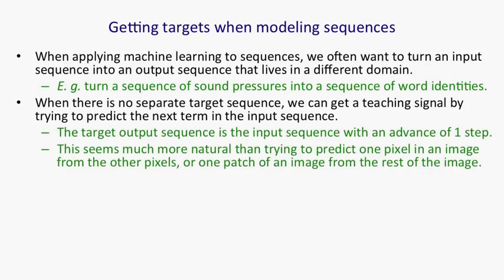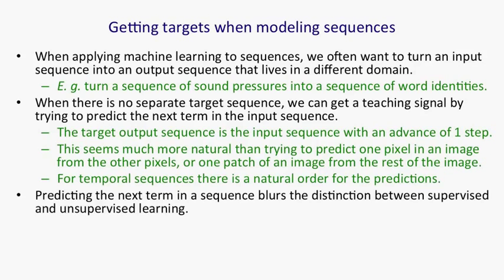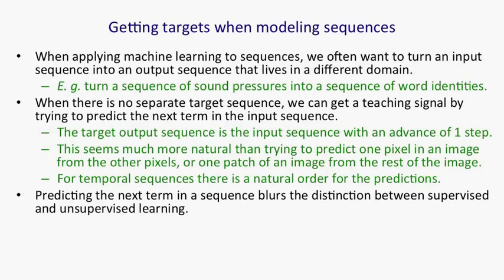This seems much more natural than trying to predict one pixel in an image from all the other pixels, or one patch of an image from the rest of the image. One reason it probably seems more natural is that for temporal sequences, there's a natural order to do the predictions in, whereas for images it's not clear what you should predict from what. But in fact, a similar approach works very well for images. When we predict the next term in a sequence, it blurs the distinction between supervised and unsupervised learning. We use methods designed for supervised learning to predict the next term, but we don't require a separate teaching signal, so in that sense it's unsupervised.